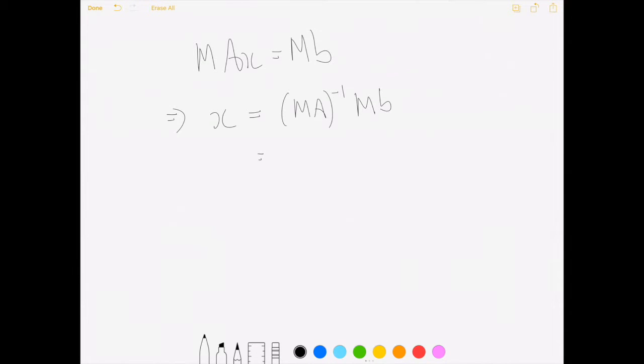So we get A inverse M inverse MB. So this is just the identity matrix. So we can leave that out. And so that gives us X equals A inverse B. So that's the same as the solution to AX equals B.